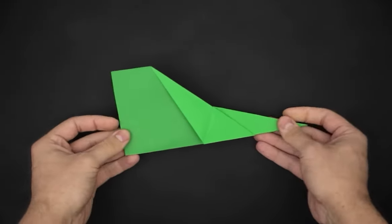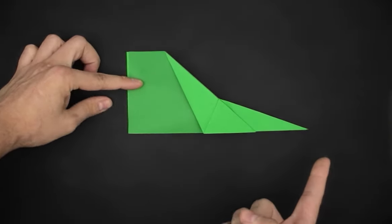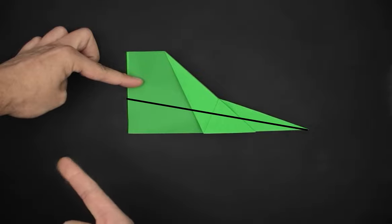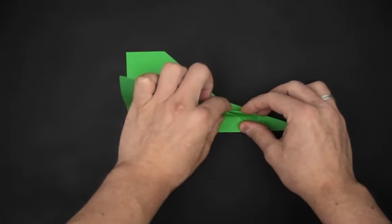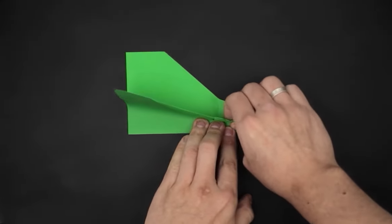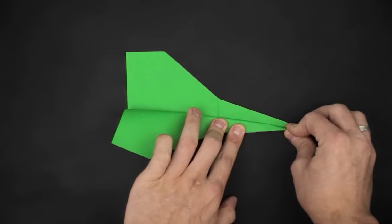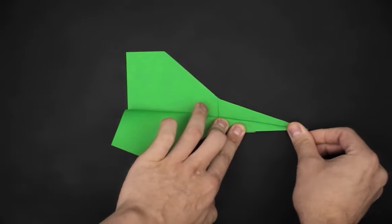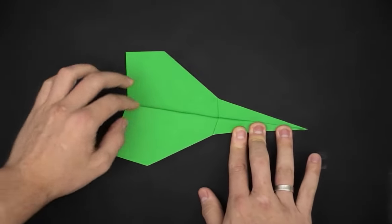Let's rotate, and to make it fly better, we'll have to fold the wings creating a diagonal. To make it easier, you just need to fold the front corner first and then continue the fold all the way to the back.